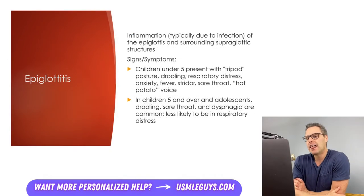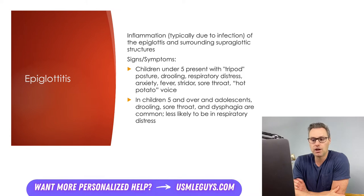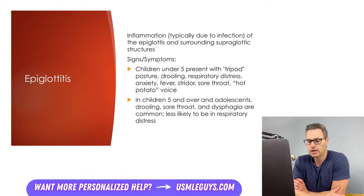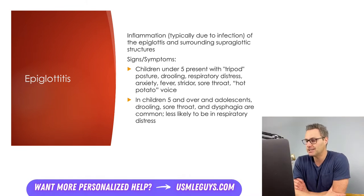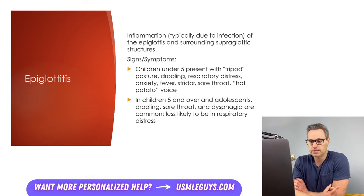Next up, we've got epiglottitis. This is caused by inflammation of the epiglottis and surrounding supraglottic structures, typically caused by infection, though sometimes from thermal injury, direct trauma, or caustic ingestion. The most common cause of infectious epiglottitis is bacteria, especially H. influenzae type B. Since the H. influenzae type B vaccination is widely available in the U.S., rates of epiglottitis in children have dramatically decreased. Other causes can include Staph aureus, Strep pneumonia, other Strep species, and rarely, viruses or fungi.